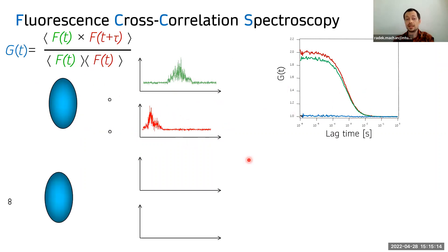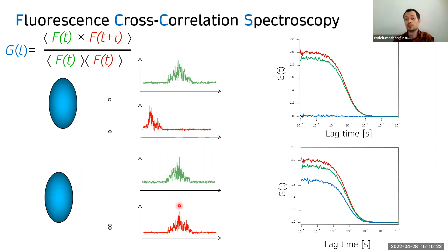So the cross correlation is flat. While if they are moving, if each particle contains both fluorophores, which contributes to both channels, then there is high cross correlation amplitude. And the ratio of the cross correlation amplitude to the autocorrelations amplitude tell us what is the ratio of the particles which contain both fluorophores.